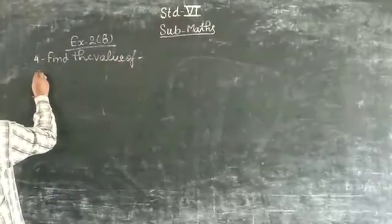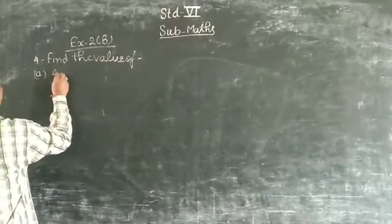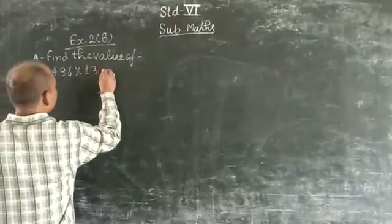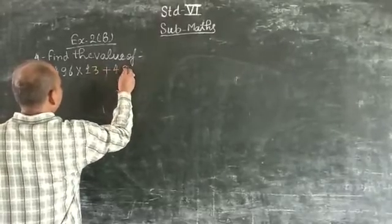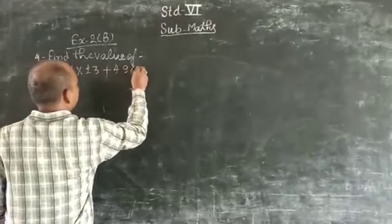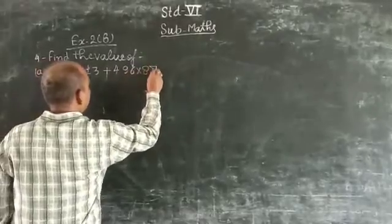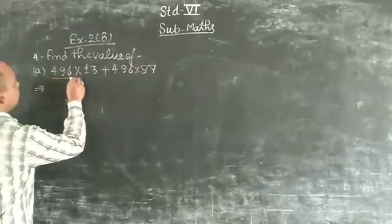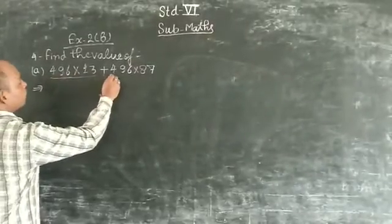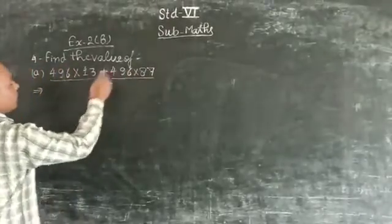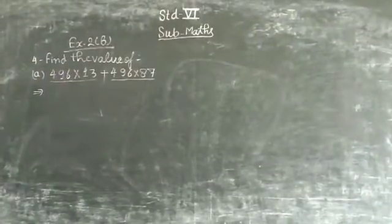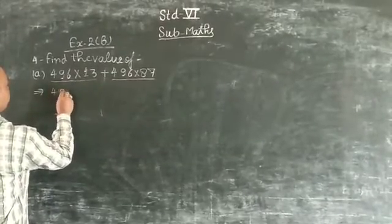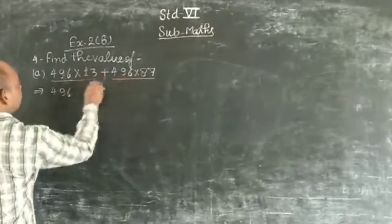Part A: 496 × 13 + 496 × 87. Now, 496 × 13 is the first term and 496 × 87 is the second term. In both terms, we know 496 is common and multiply is common.